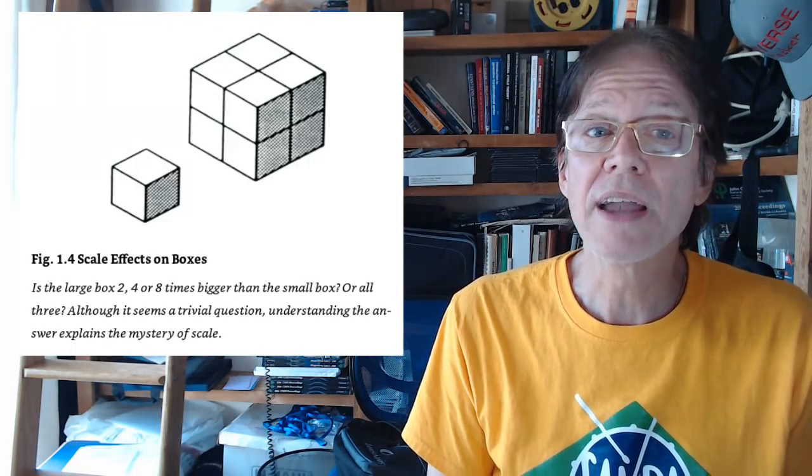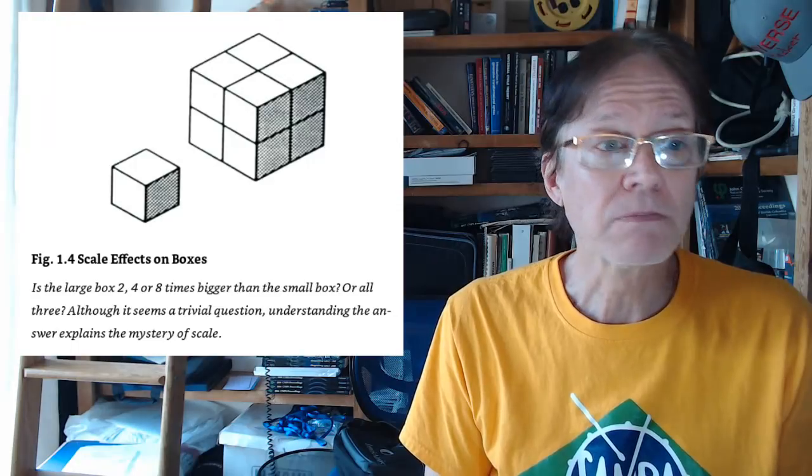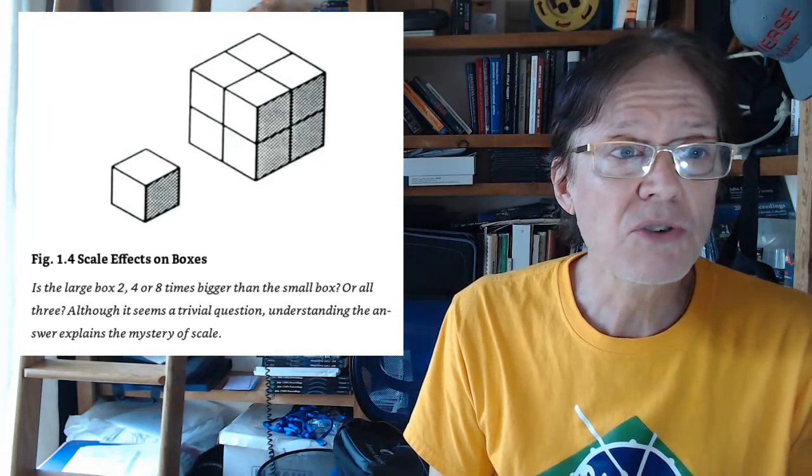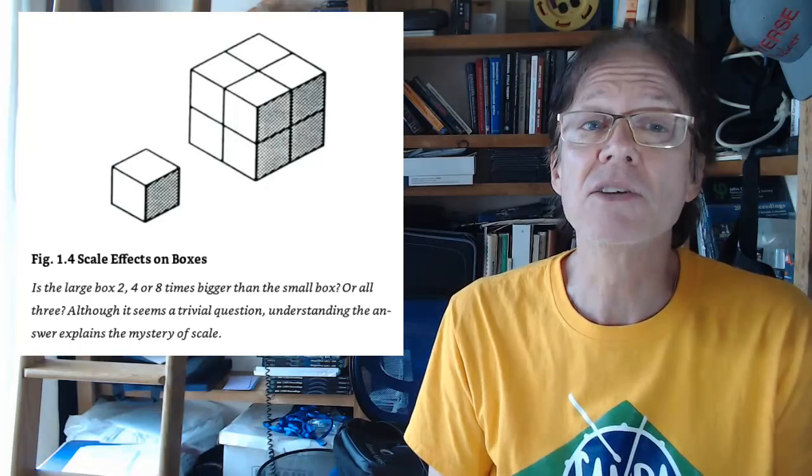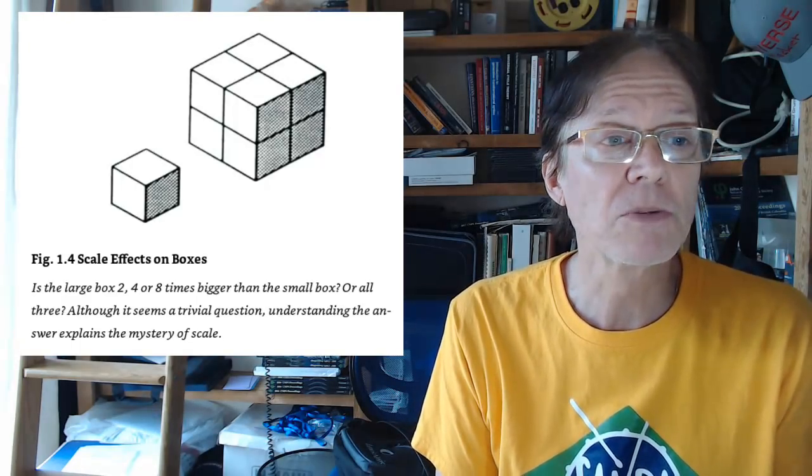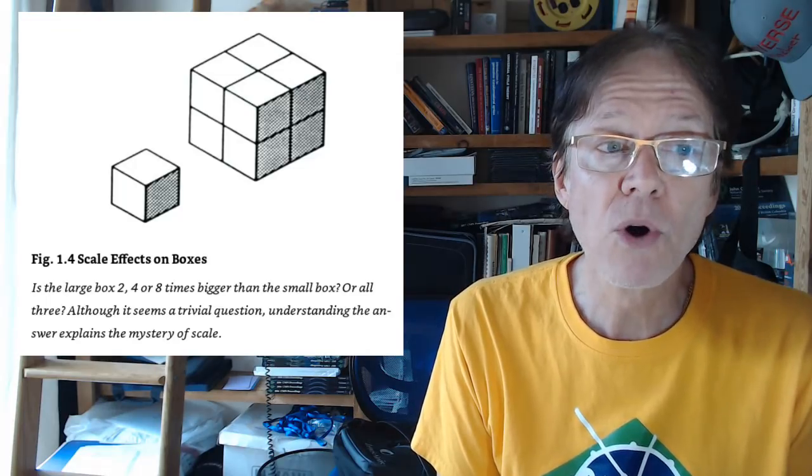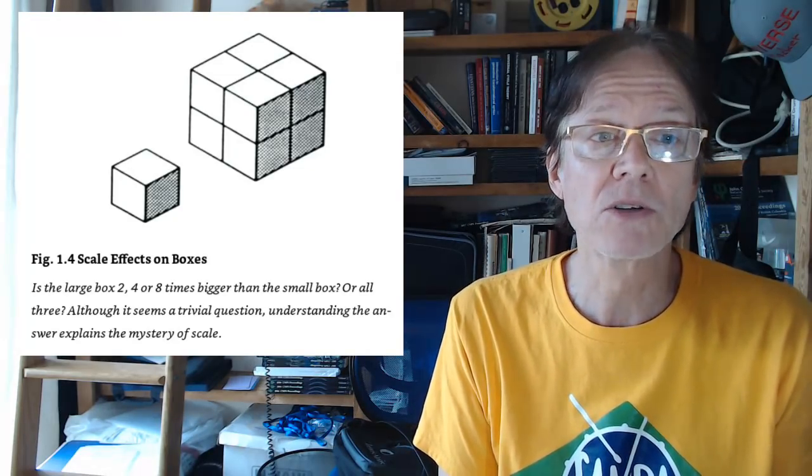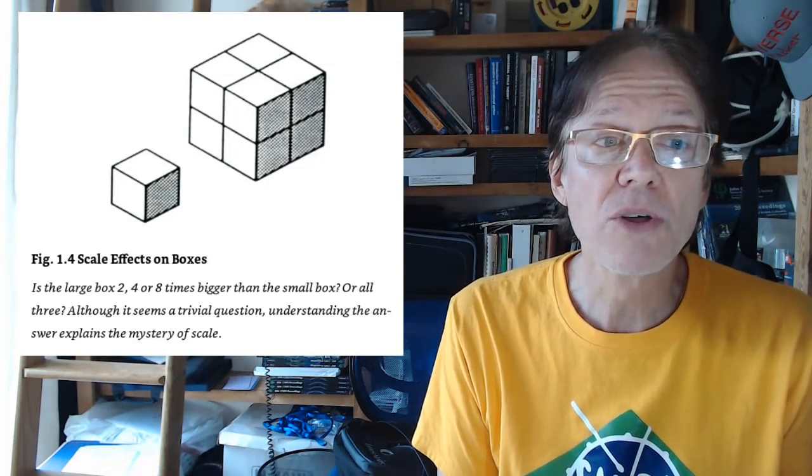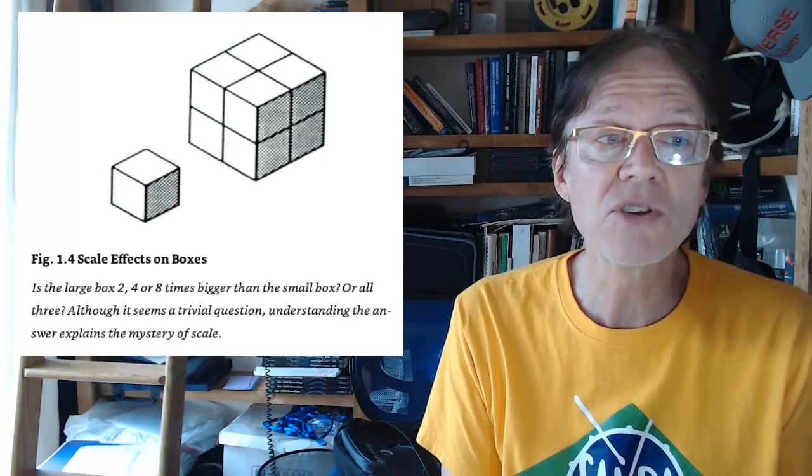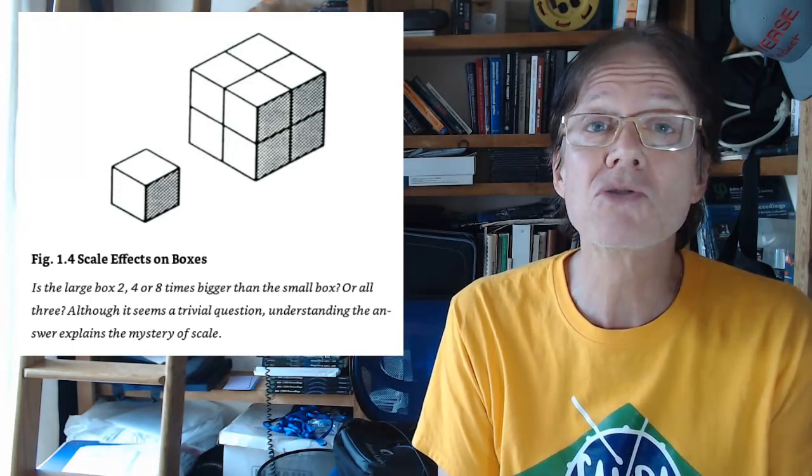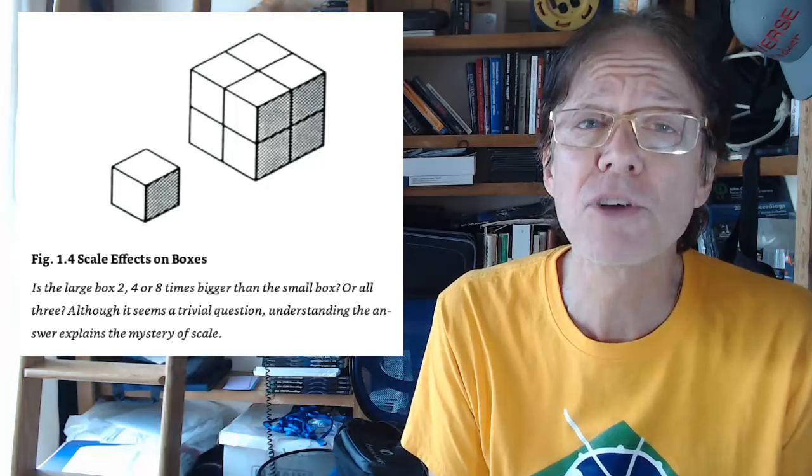And if you look at this little diagram from his book, it tells the entire story. And this is why he got on this path. Take a look here, you see the one cube, and then a cube that is double in size. I think pretty much everybody would say, yep, that's double in size. But he asked the question, is this large box two, four, or eight times bigger than the small box, or all three? Although it seems a trivial question, understanding the answer explains the mystery of scales. And it absolutely does.